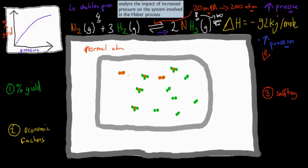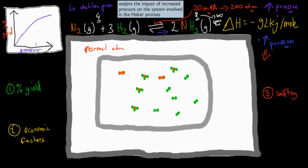So that's what the system does — it pushes to the right, which means instead of having 2 moles of ammonia beforehand, now we have 4. We've increased the yield of ammonia. If you look at this graph, it shows that the more pressure we have, the higher our percentage yield. For example, at a thousand atmospheric pressure we would have the highest yield.